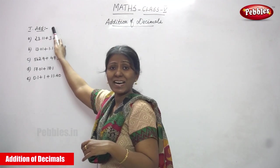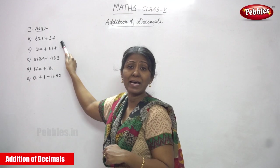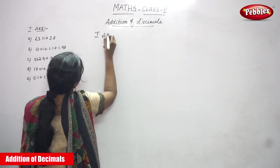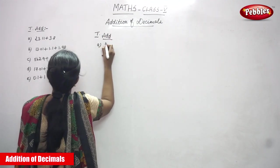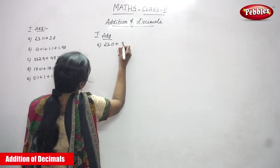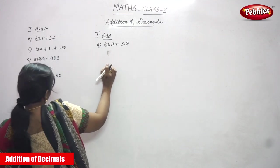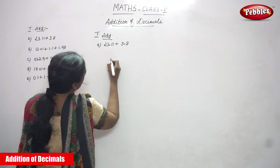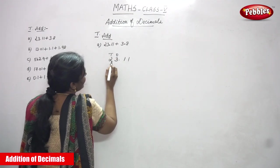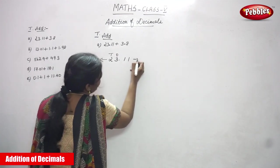Add. The first sum is 23.11 plus 3.8. You have to add both numbers. So you have to write 23.11. This is the ones place and this is the tens place. This is the whole part, and this is the decimal part.